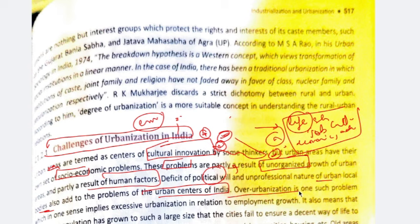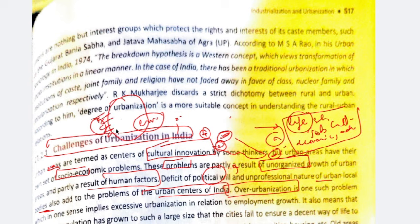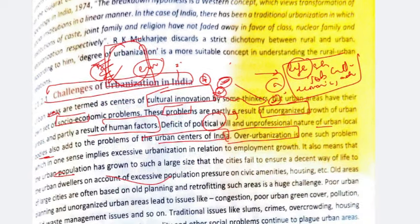Over-urbanization is also a very big problem. Over-urbanization means cities are growing, population is increasing, but people are not getting a decent standard of living — the living standard that should be in cities, they are not getting. The city cannot sustain such a big population in a decent way. This is over-urbanization. It means the urban population has grown to such a large size that cities have failed to ensure a decent way of life to urban dwellers, putting pressure on civic amenities, housing, etc.